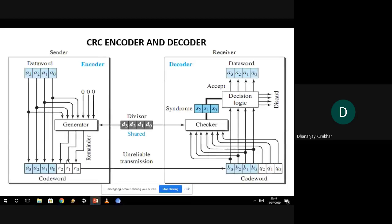The last protocol we saw was Selective Repeat. The key difference in Selective Repeat is that we don't resend all unacknowledged frames — we resend only the frames for which a negative acknowledgement was received. So there are two kinds of acknowledgements in Selective Repeat: positive acknowledgement and negative acknowledgement.